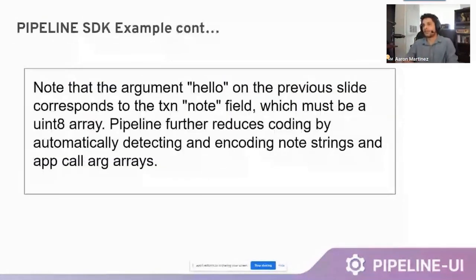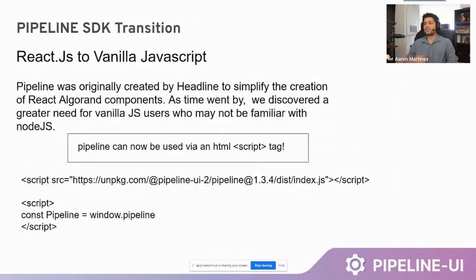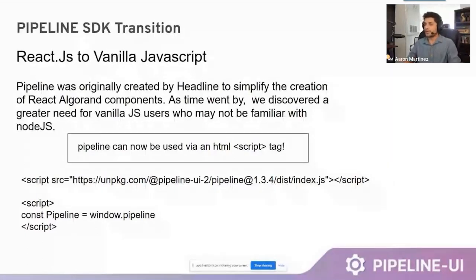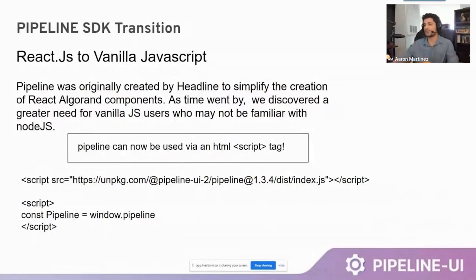The argument 'hello' on the previous slide corresponds to the transaction note field, which must be a Uint8 array. Pipeline further reduces coding by automatically detecting and encoding note strings and app call arg arrays. There's an interesting transition happening right now to integrate vanilla JavaScript into the SDK, because Pipeline was originally created to simplify the creation of React Algorand components. As time went by, we discovered a greater need for vanilla JavaScript users who may not be familiar with Node.js. As of right now, Pipeline can be embedded directly on the front end of a website like WordPress through a simple script tag.